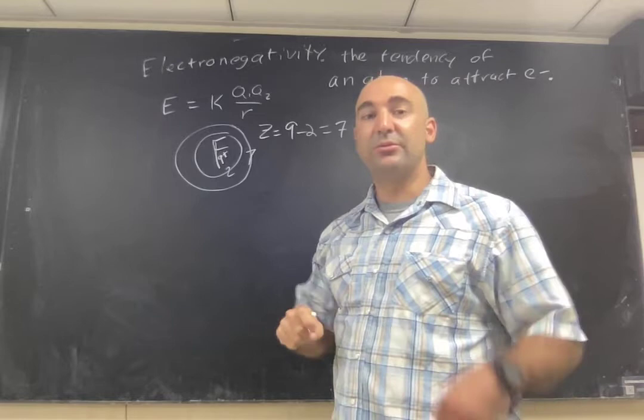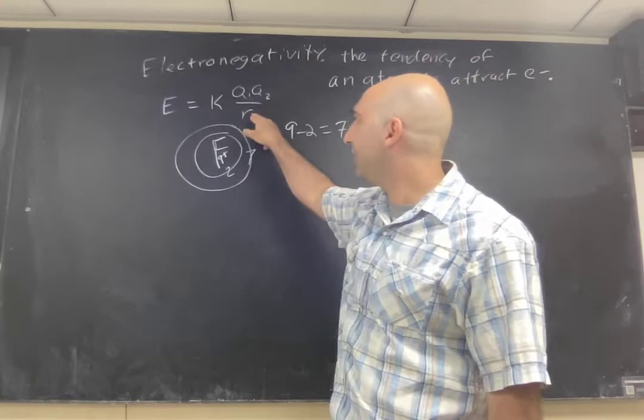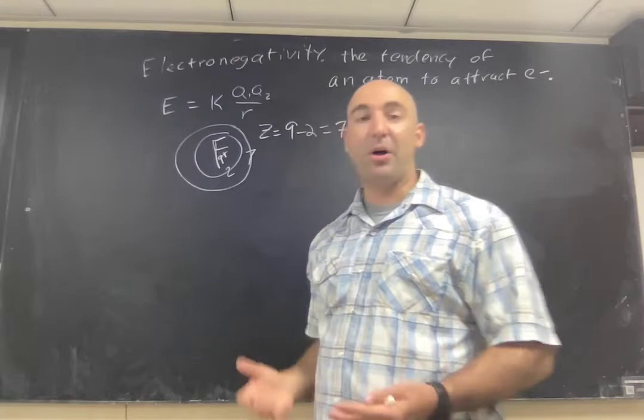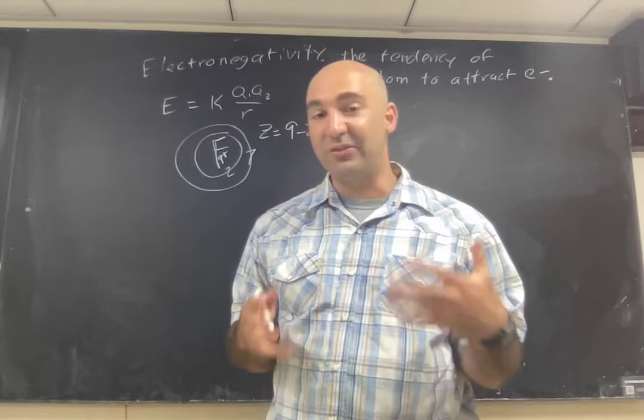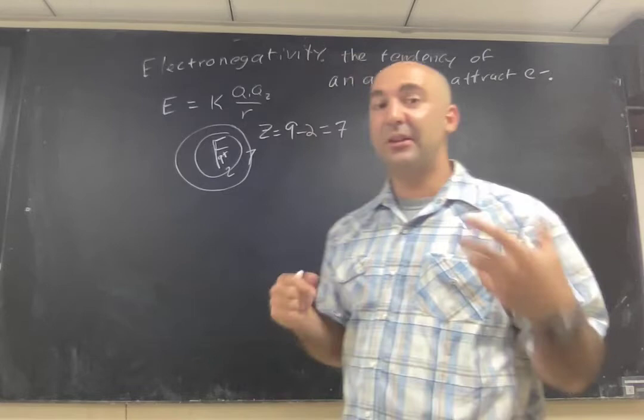So when you talk about electronegativity, it's not actually that complicated. It's basically just the relationship between the radius and the effective nuclear charge Z, based on Coulomb's Law. A guy named Pauling came up with some numbers for it. And what these numbers tell you, and this is where you actually have to be careful, because textbooks have different values for this.